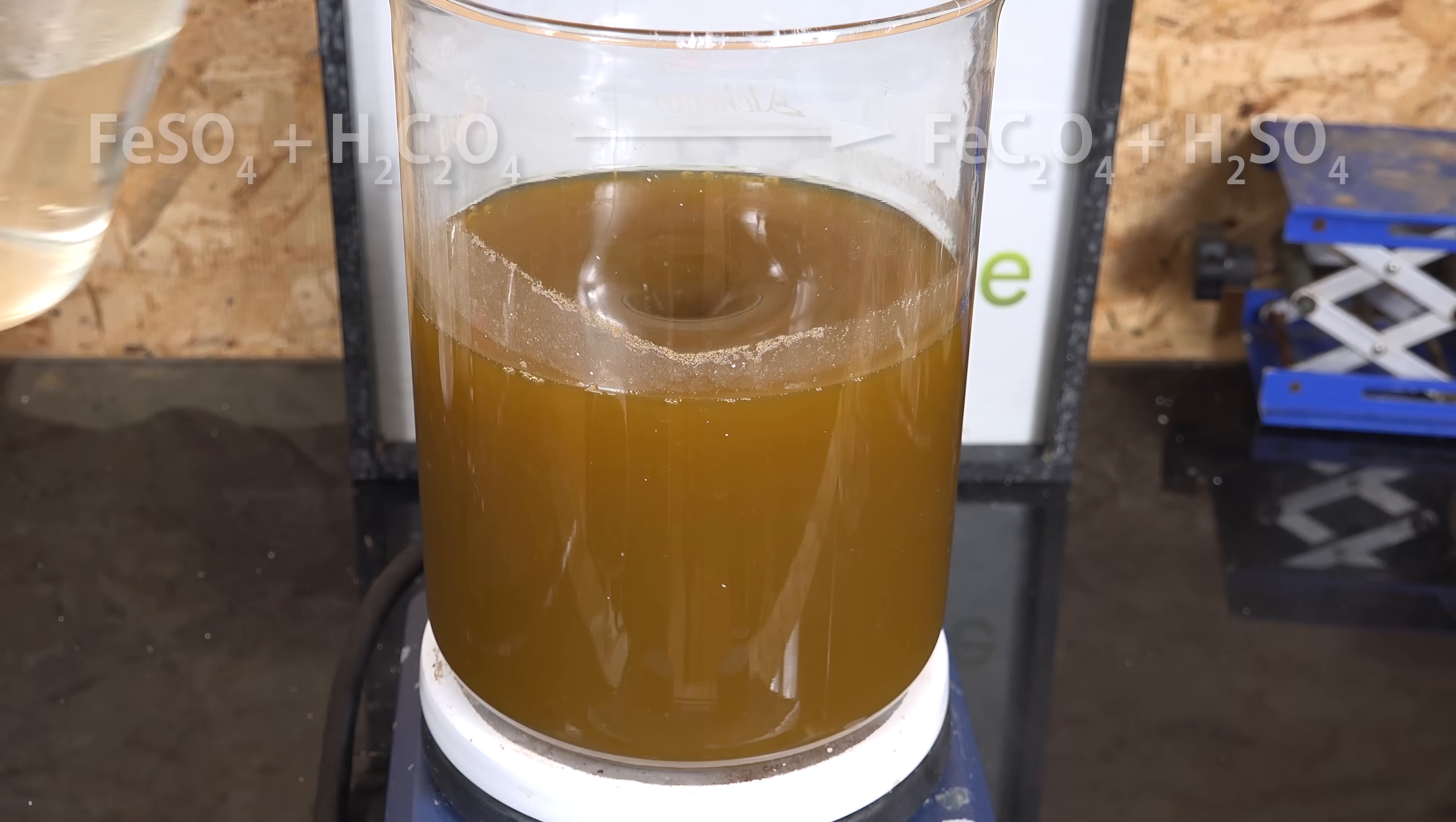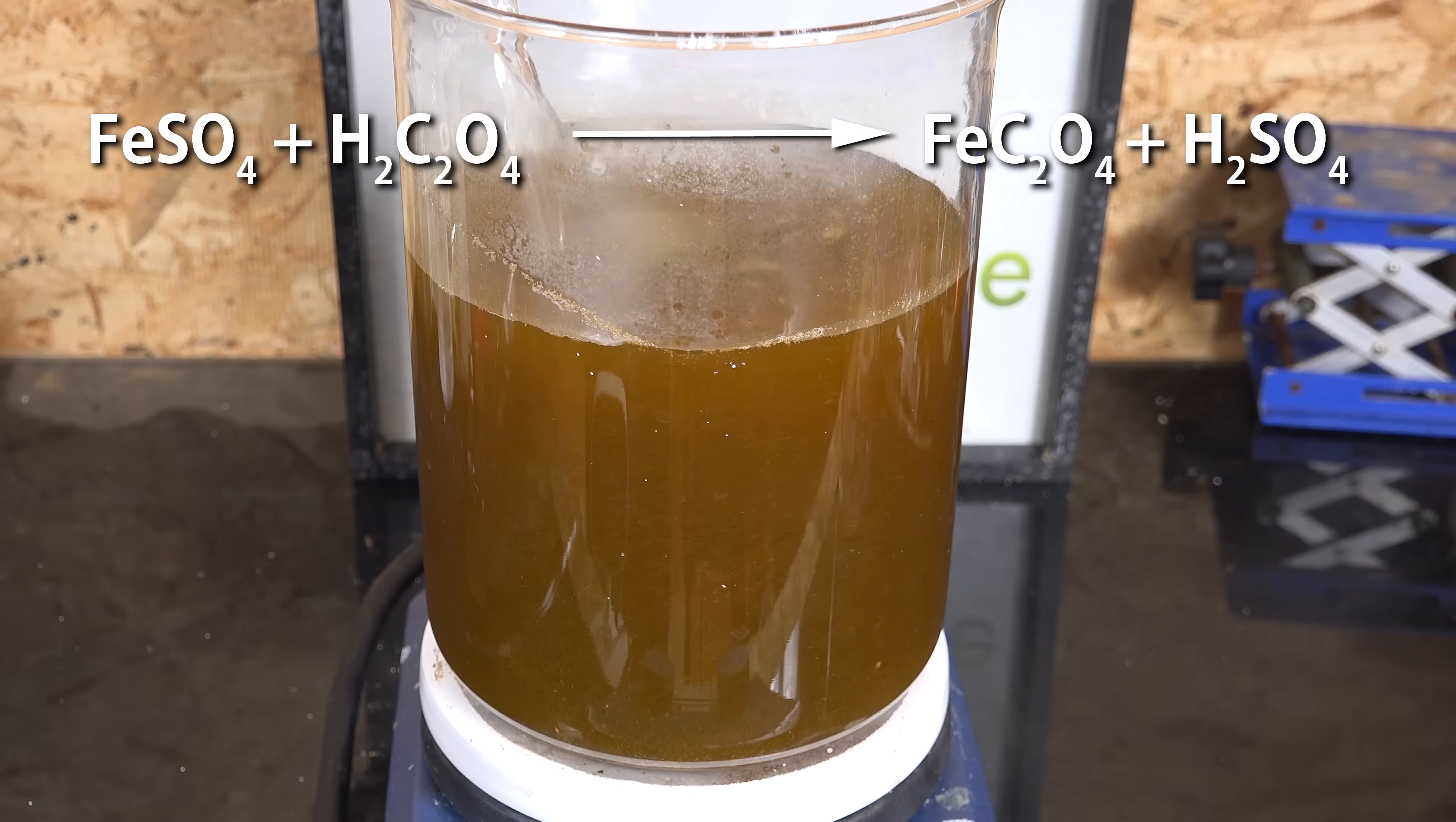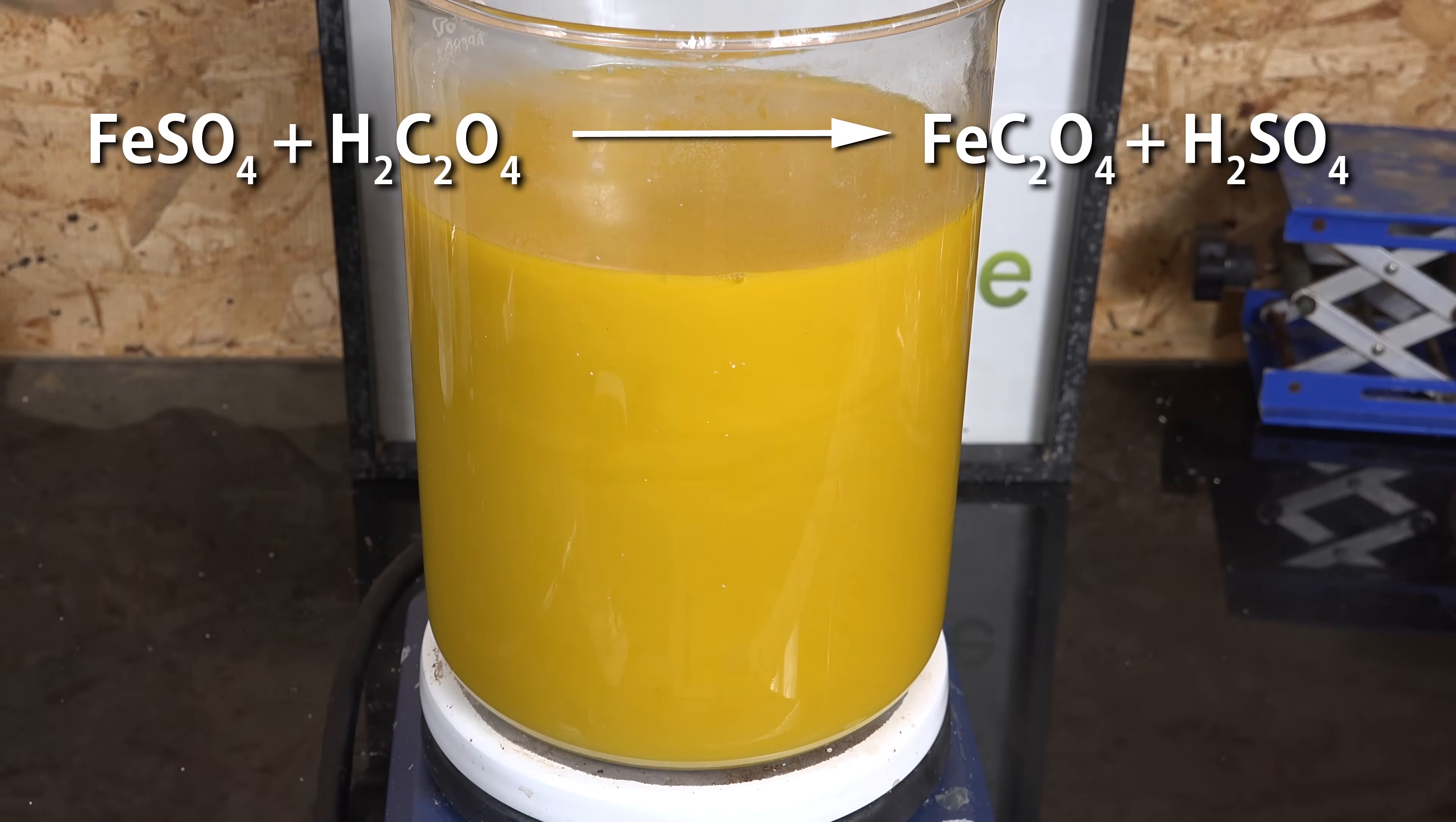Oxalic acid has the rather interesting property that forms insoluble oxalate solids with many metal ions. So if reacted with iron sulfate it will produce insoluble iron oxalate. The sulfate ion is freed and becomes sulfuric acid. This is a rather unusual reaction because usually the reverse reaction is more favorable.